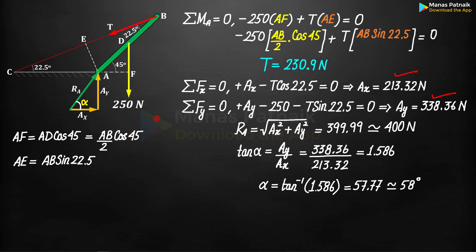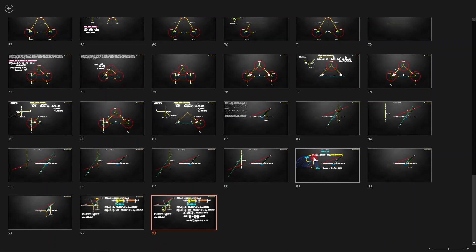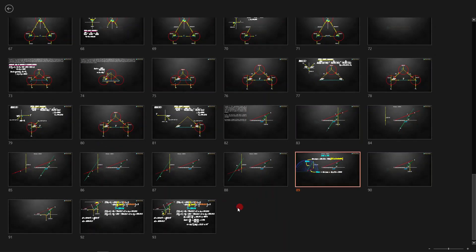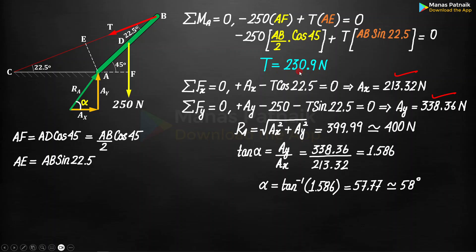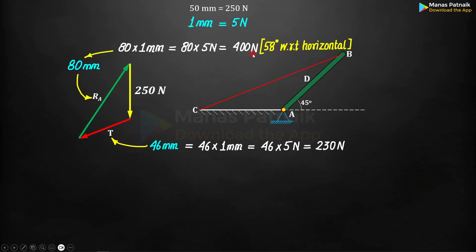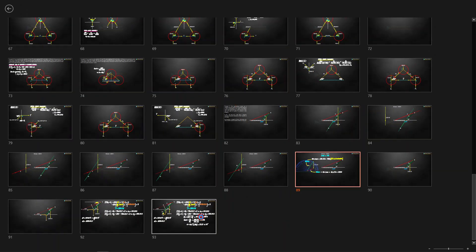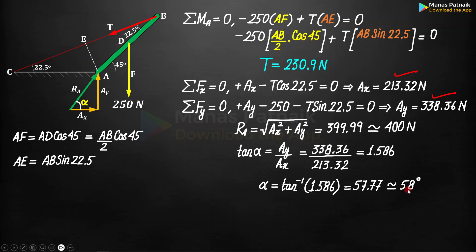All answers match the previous graphical technique. In this analytical approach, tension T worked out as 230.9 N; the graphical approach gave 230 N — so 230.9 is the exact value. The resultant at A worked out as 400 N in both approaches, and the angle was 58 degrees in both. This problem lets you directly compare the graphical and analytical approaches. I hope this is clear — see you everyone, thank you very much, have a nice day.